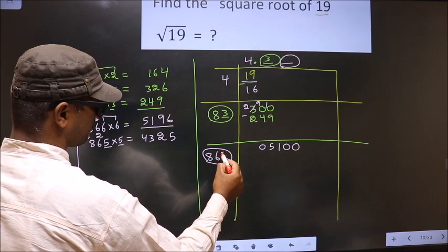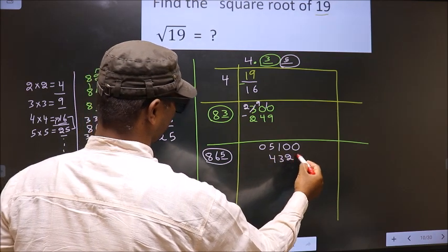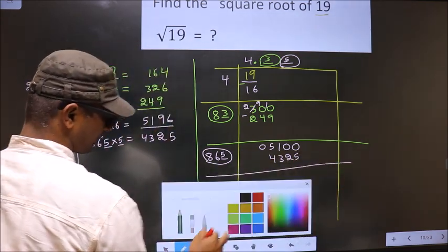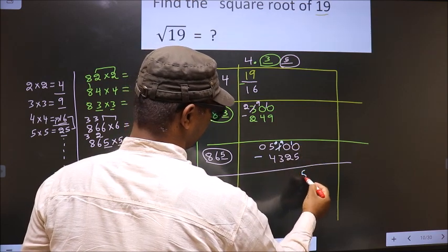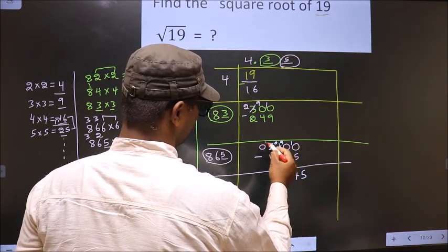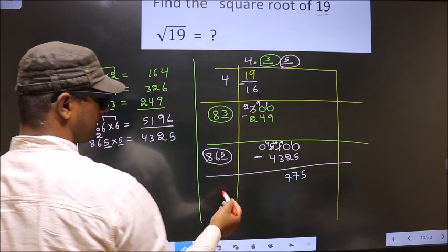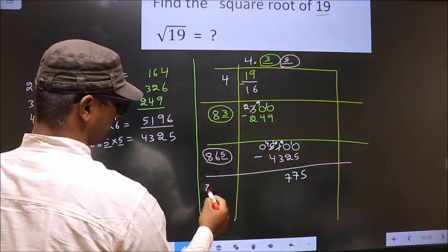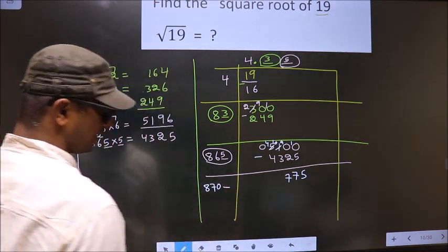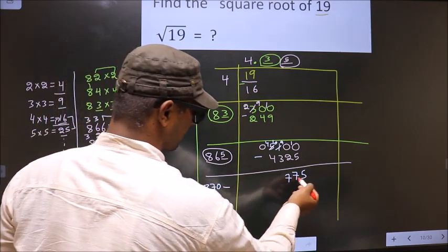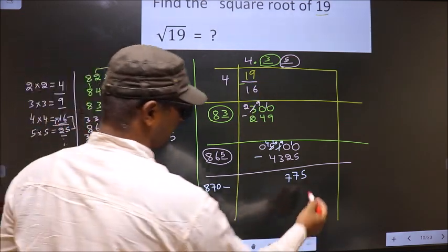So we take 5 here and 5 here, giving 4325. Now subtract: 5100 minus 4325. 10 minus 5=5, 9 minus 2=7, 10 minus 3=7. Remainder is 775. Now we add 865 plus 5 to get 870. This number will be smaller than the next dividend, so we already have a decimal — directly take two zeros.